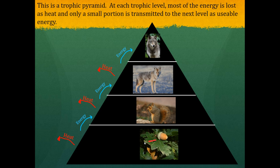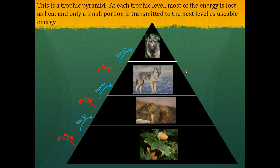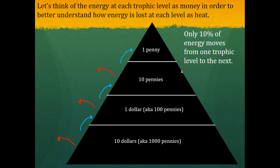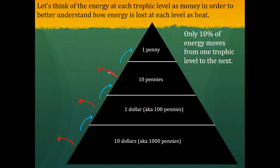Only 10% is passed from one trophic level to the next, so top predators and top consumers have to eat a lot of food in order to get enough energy to survive. To put this in terms of money: you start with $10, which is 1,000 pennies; only 10% gets passed on, so now you have 100 pennies — $1; then 10 pennies; then one penny. You lose most of your energy, or your money, as heat.